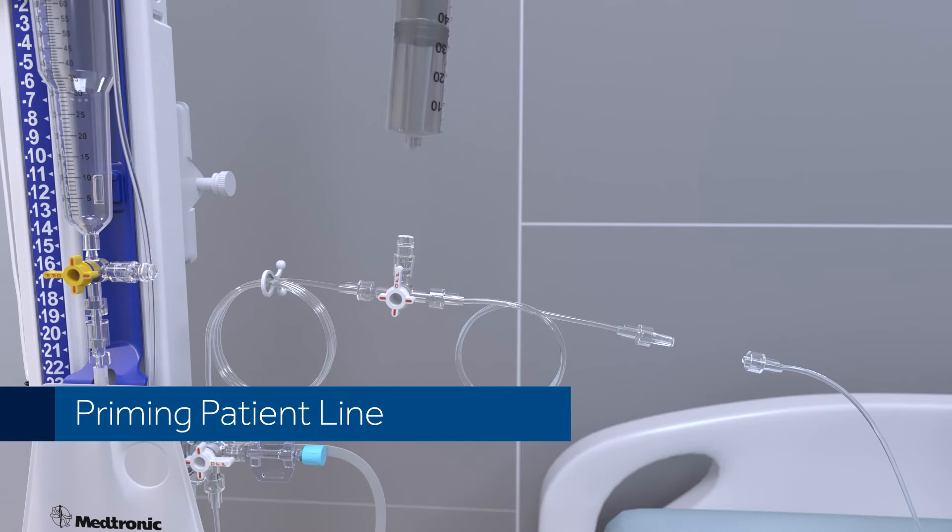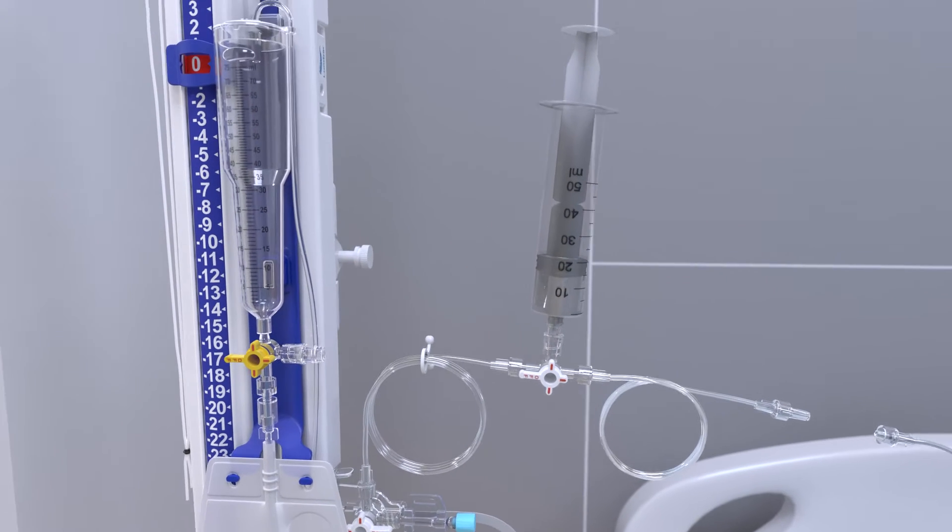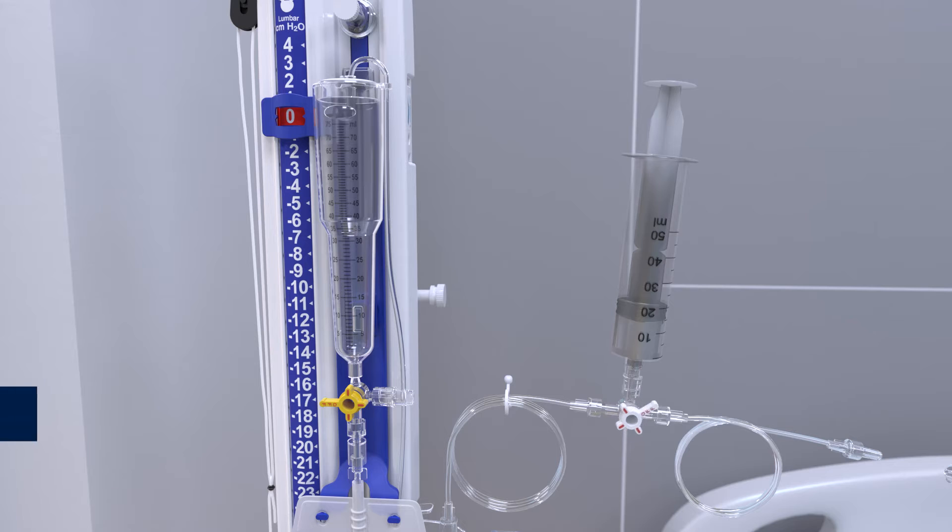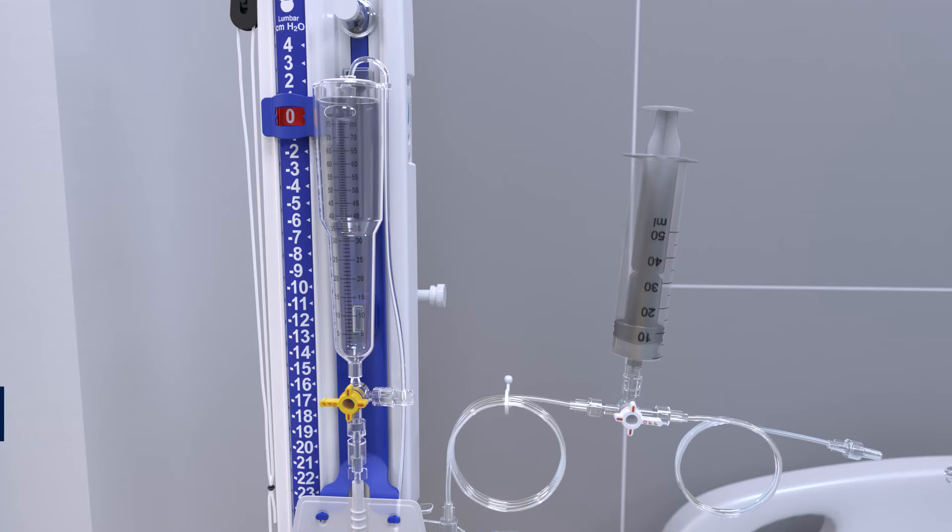To prime the system, fill a 30cc or larger syringe with preservative-free normal sterile saline. Using sterile technique, attach the syringe to the patient line stopcock injection site. Rotate the stopcock arm as shown to prime the short section of patient line tubing first. Rotate the stopcock 180 degrees to prime the patient line all the way through to the drip chamber. Use care to ensure all bubbles have been removed from the line.